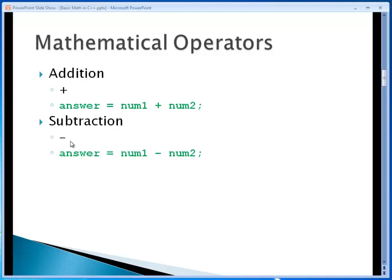All right, next, subtraction. Again, as you would suspect, it's the dash symbol on your keyboard. And here we place again the variable that will receive the answer on the left. Then we have assignment operator. So the answer is assigned the value of num1 minus num2 semicolon.